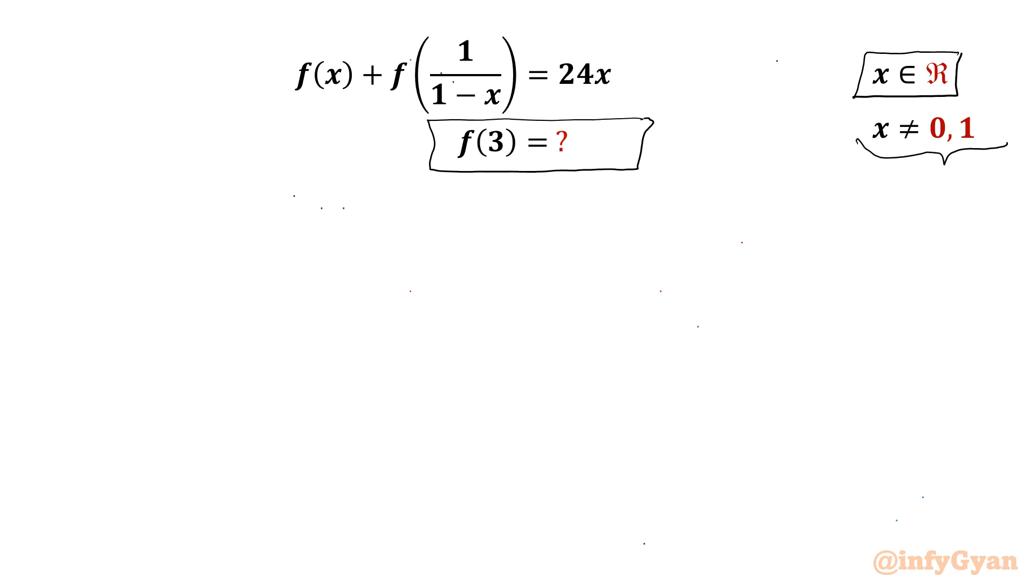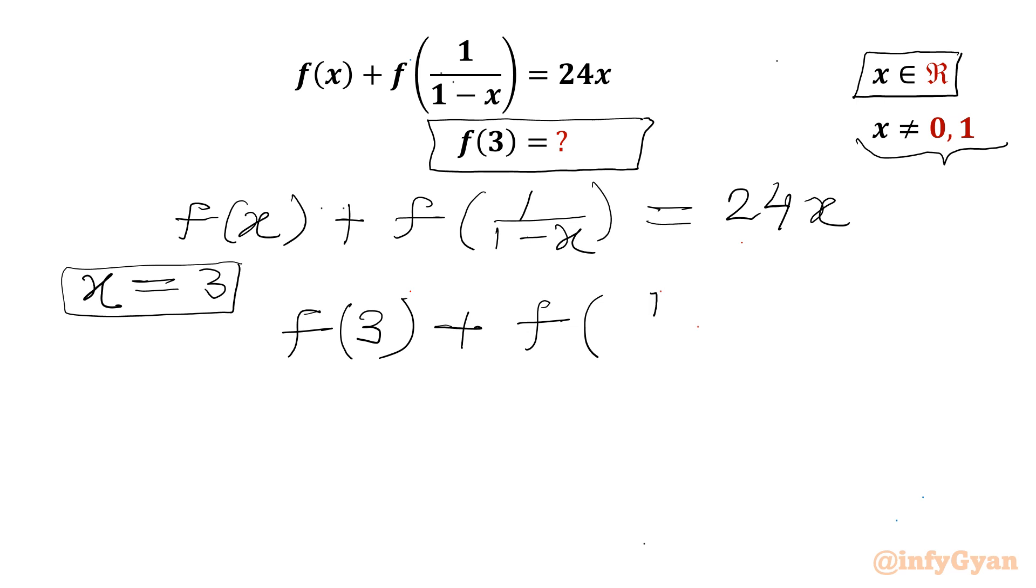So let's get started by writing equation f(x) + f(1/(1-x)) = 24x. Now I will put x equal to 3. So we can write f(3) + f(1/(1-3)) = 24 times 3.